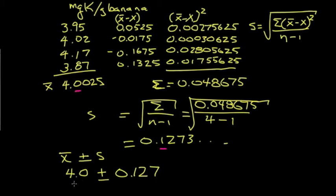So both the measured average quantity and the standard deviation has the same units as the thing that we're trying to measure. In milligrams of potassium, in grams of banana.